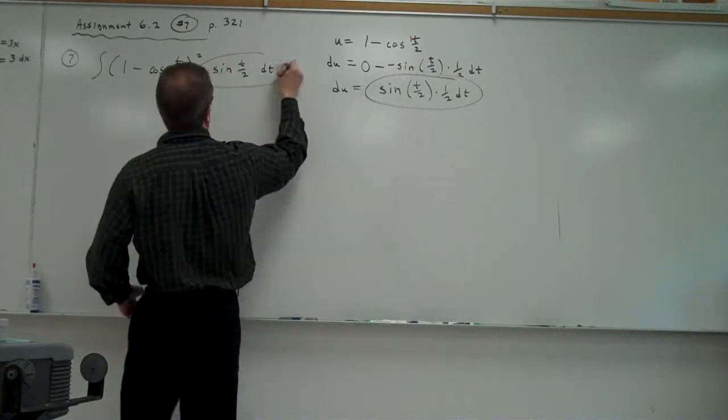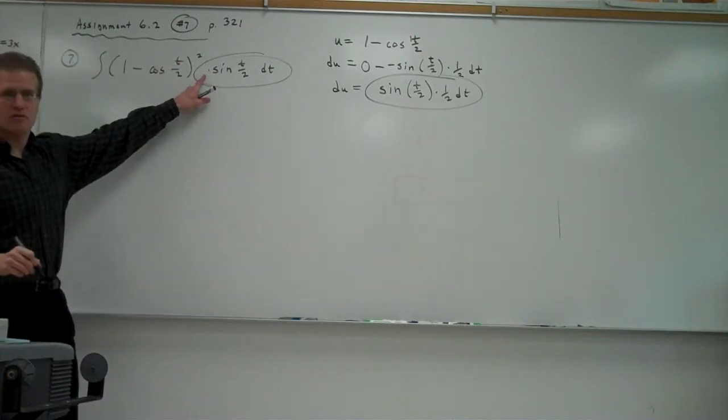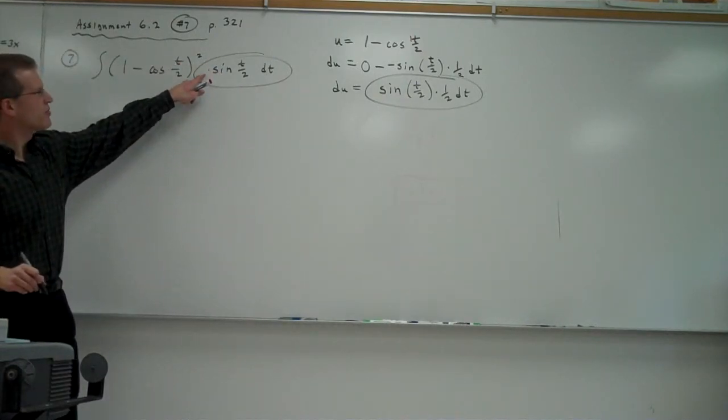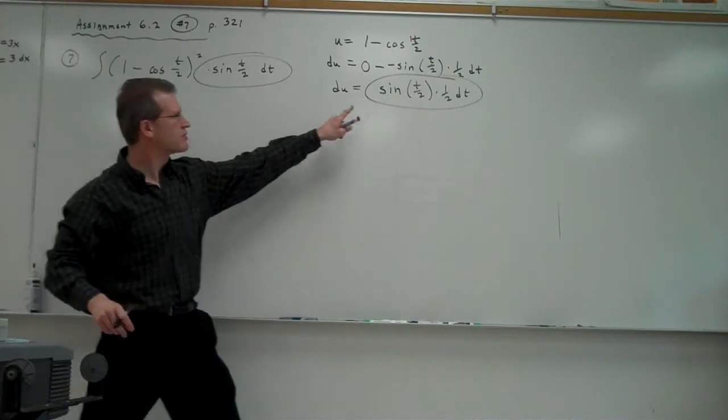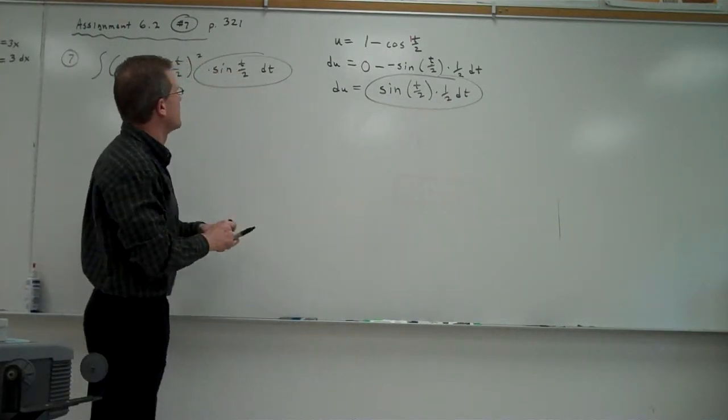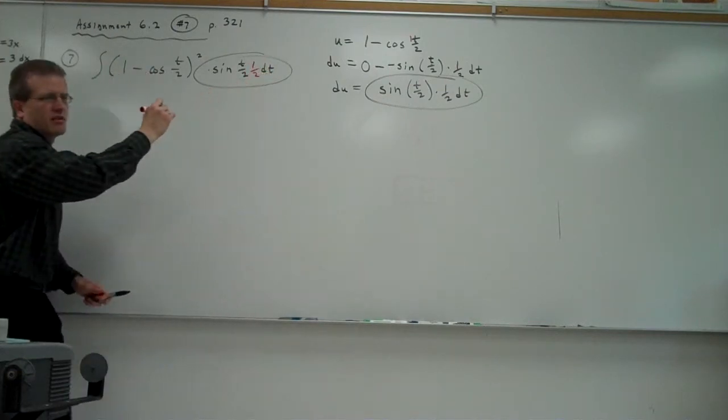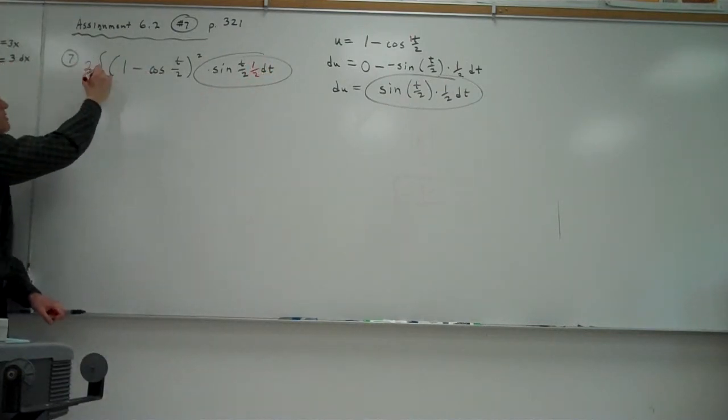That's what I need to get right there. I need to get my du right there. So what number do I have to put in here that I don't have right now? I need a half. So there's a half in my du. I don't see a half here. If I put a half in here, what number do I have to put up front? 2. It's reciprocal.